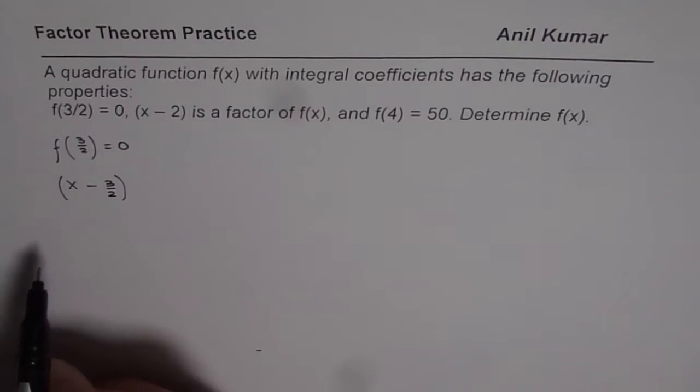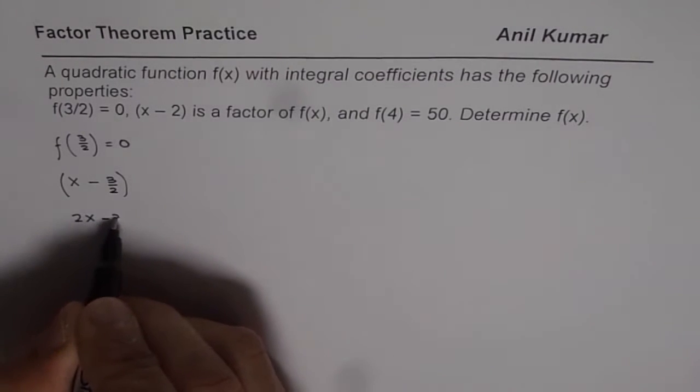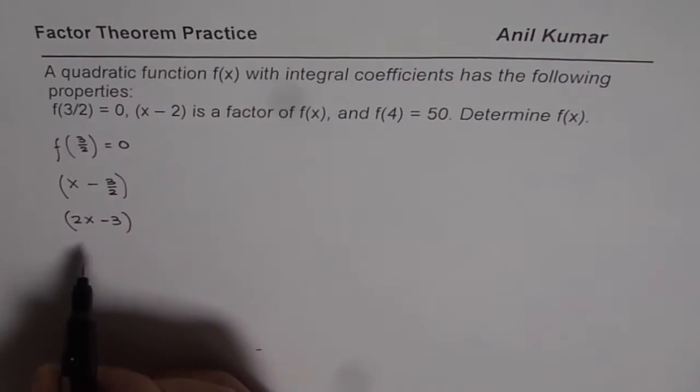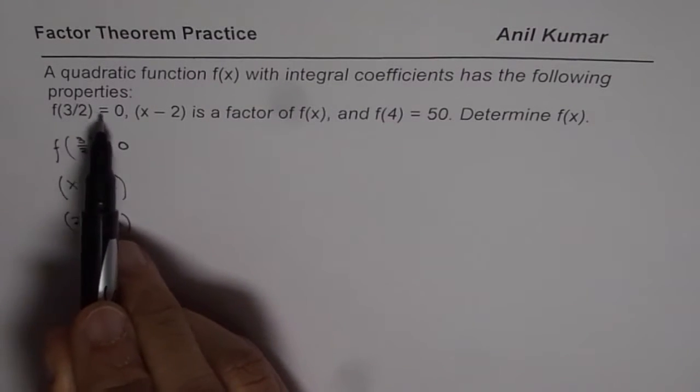That means we have one of the factors. This factor could be actually written as 2x minus 3. So in our function, we will use 2x minus 3 as the factor based on f(3/2) equals 0.